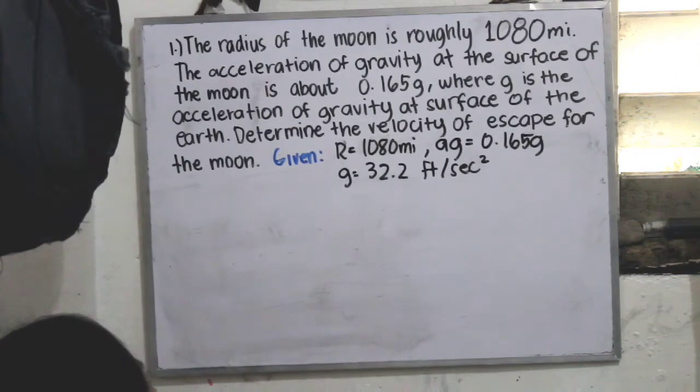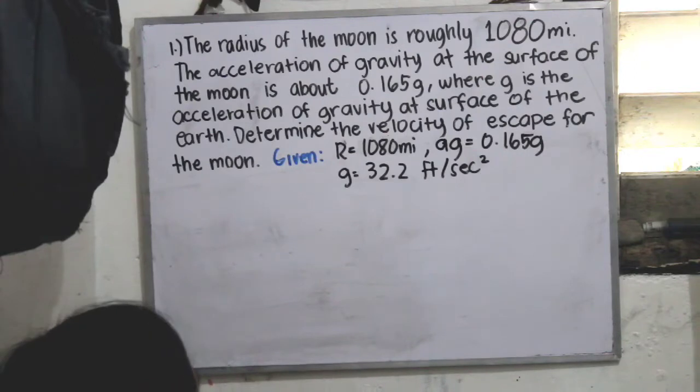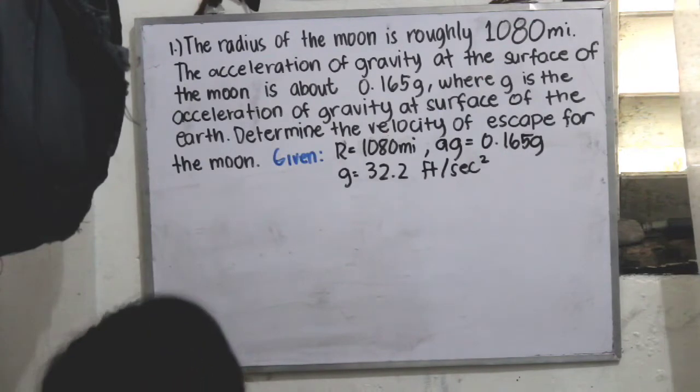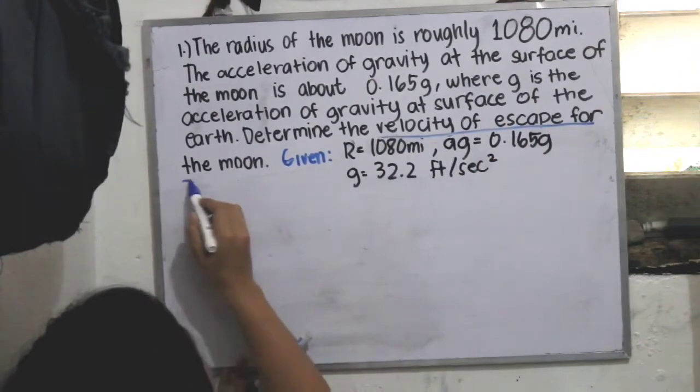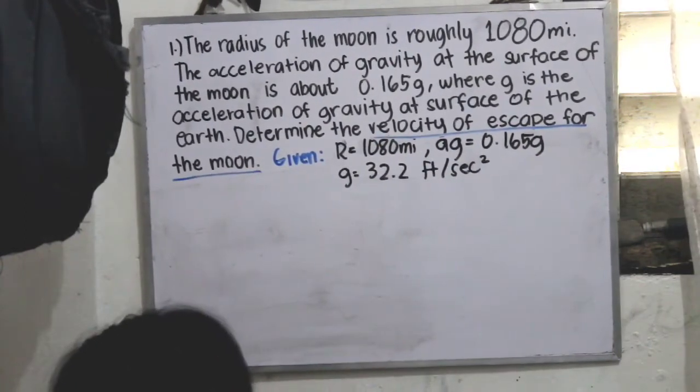So we are asked to find the required, which is the velocity of escape for the moon, which is Ve.